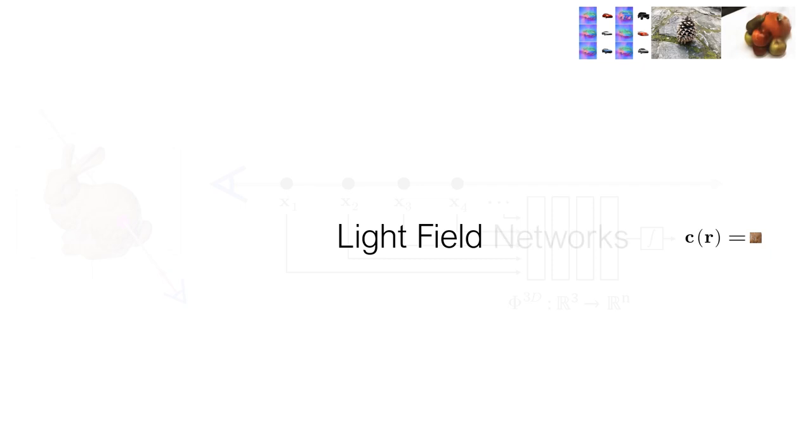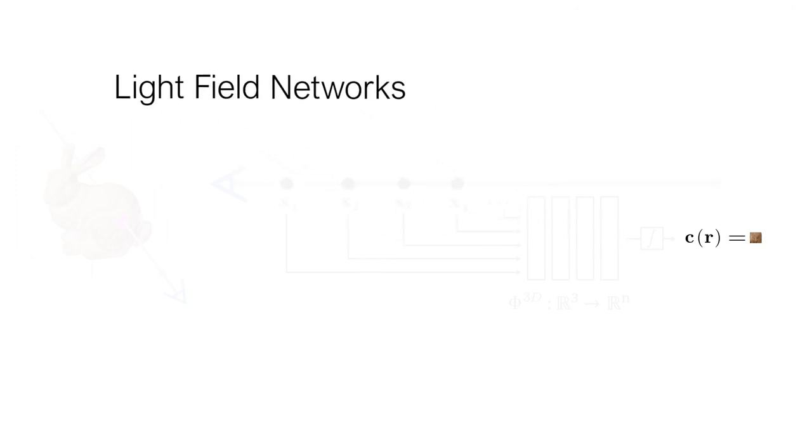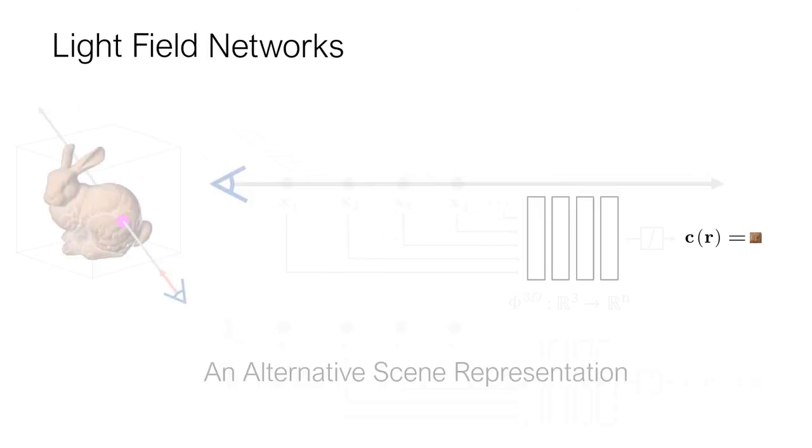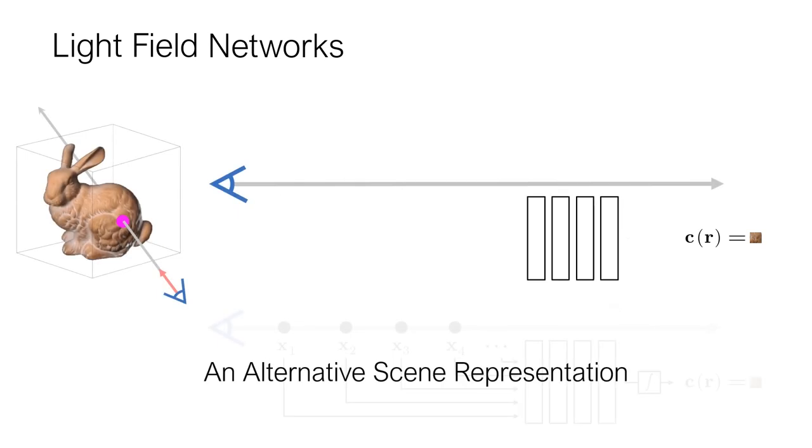We introduce light field networks, or LFNs, a novel neural scene representation which directly parameterizes the 360-degree light field via a neural network. Light field networks take as input an oriented ray, represented via its Plucker coordinates, and directly return whatever is viewed by that ray.